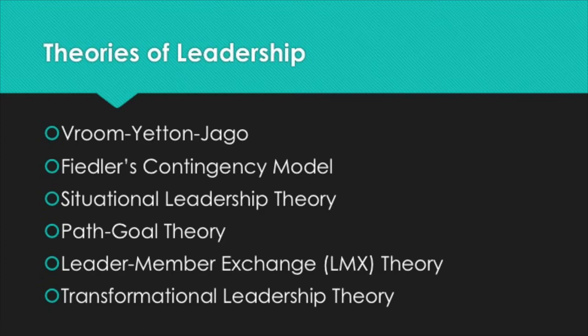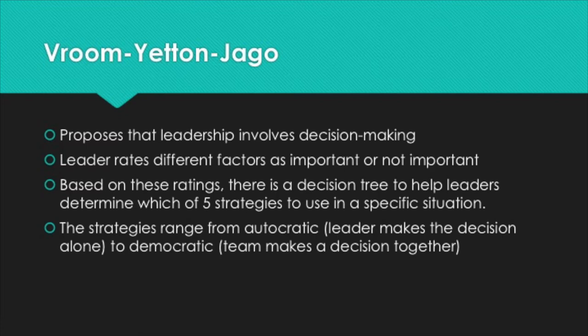First, let's talk about Vroom Yetton Jago. This theory proposes that leadership involves decision-making. Leaders rate different factors as either important or non-important, and then based on these ratings, there is a decision tree that Vroom Yetton Jago made that helps leaders determine which of five different strategies to use in a specific situation.